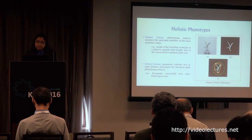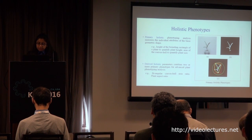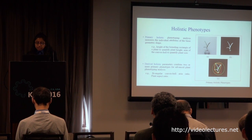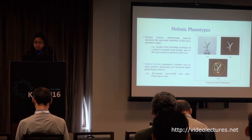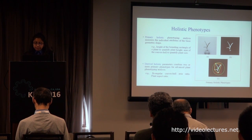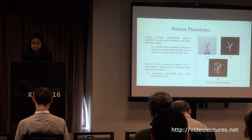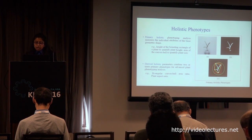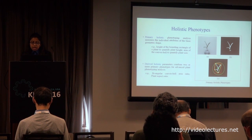For holistic phenotyping analysis: Figure A shows the original image of a corn plant. Figure B shows the corresponding binary image. Figure C shows the computed primary holistic phenotypes — the green circle, which is the minimum enclosing bounding circle, measures roundedness; the convex hull shown in yellow measures the size of the plant; and the height of the plant is computed from the height of the rectangular bounding box shown in red.